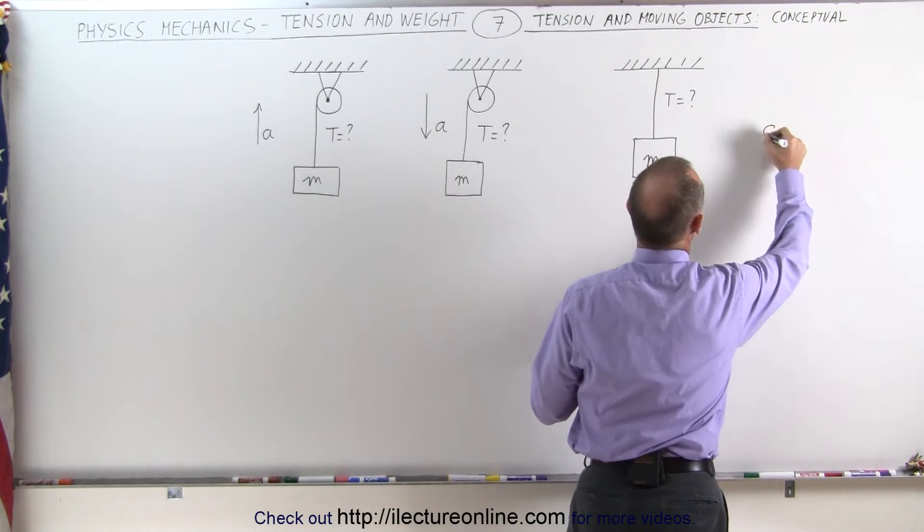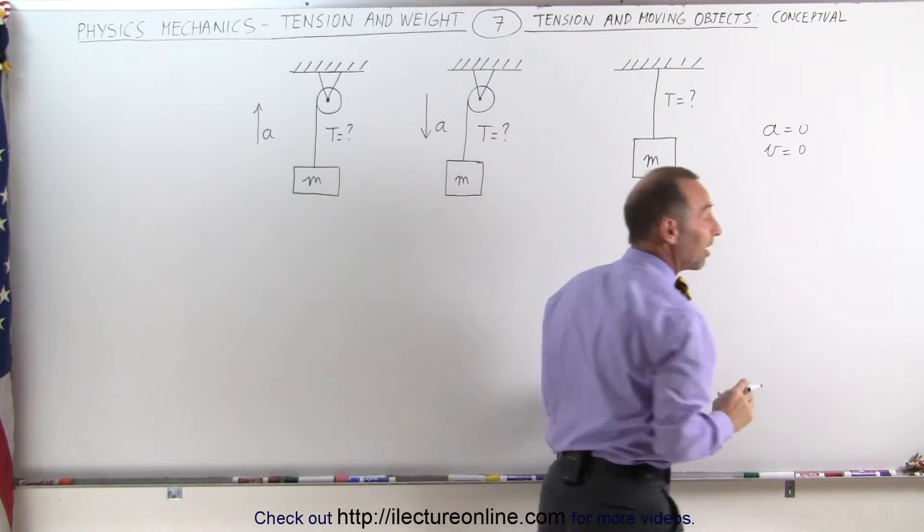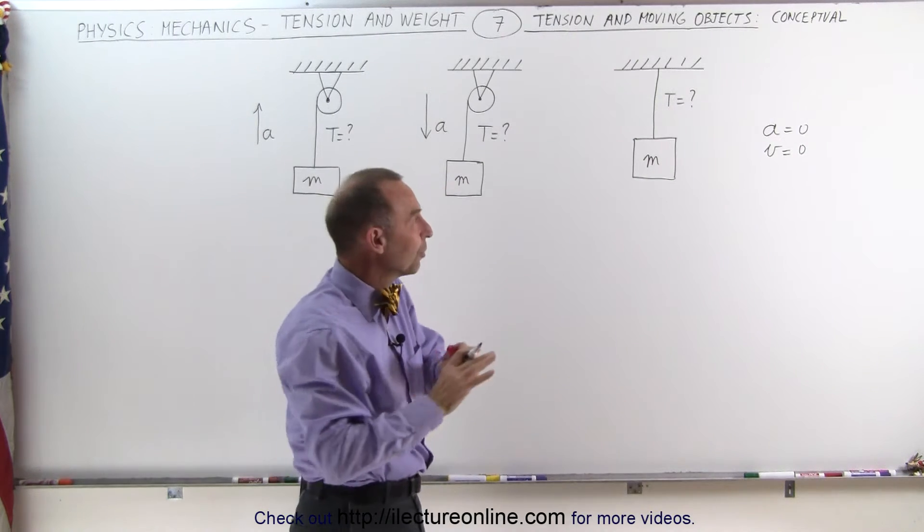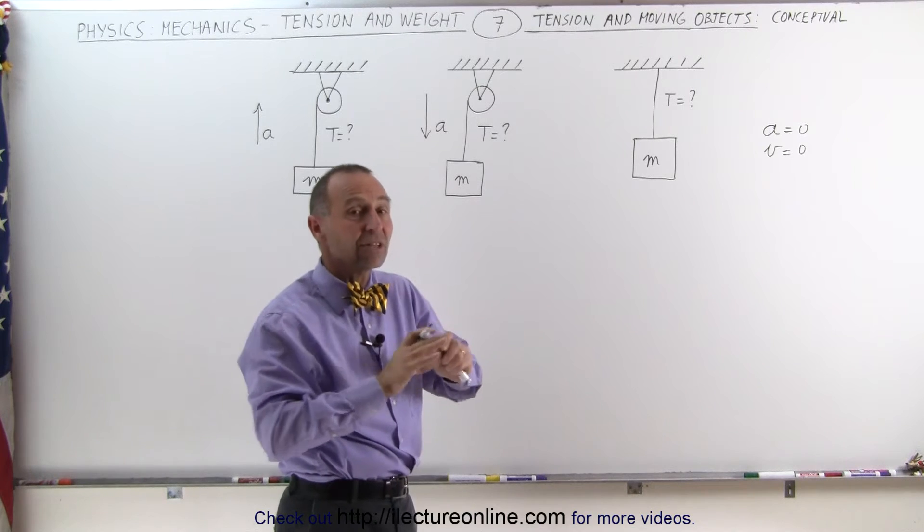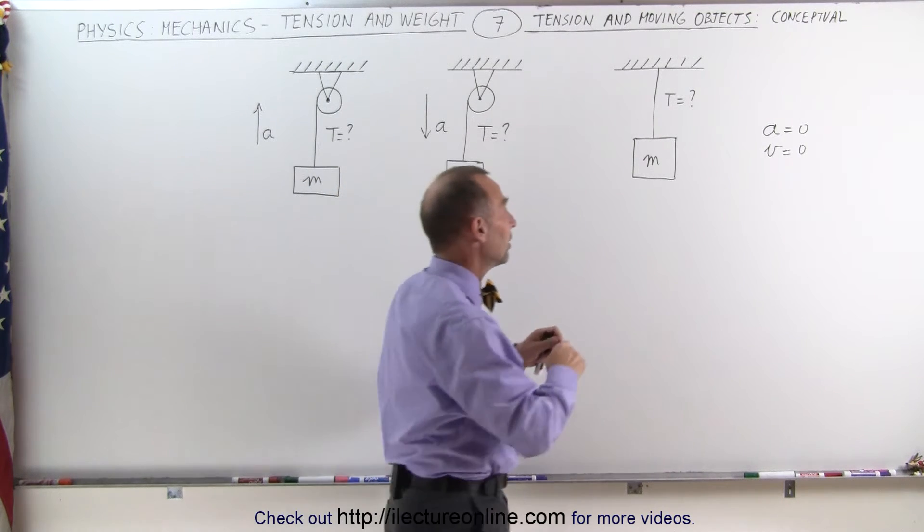So in this case, if the acceleration is equal to zero and the velocity is equal to zero, not that this is important because it could be constant velocity, but simply to make it simple, let's say the object is simply hanging there, what would be the tension in that string?